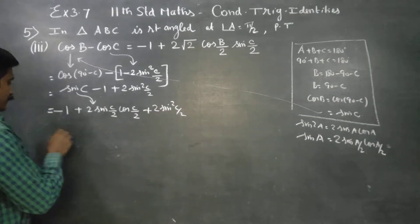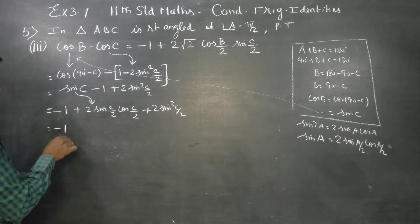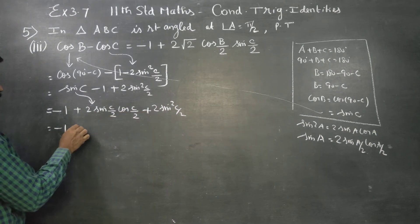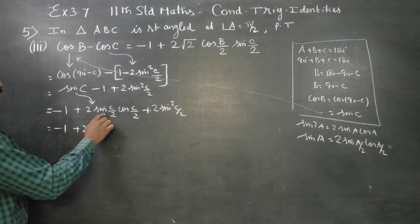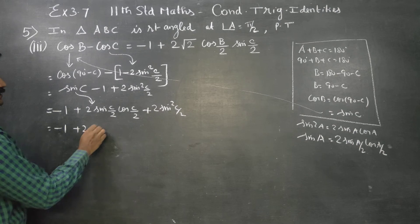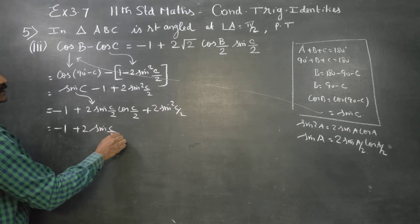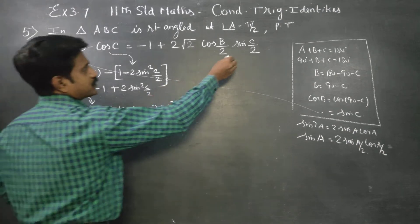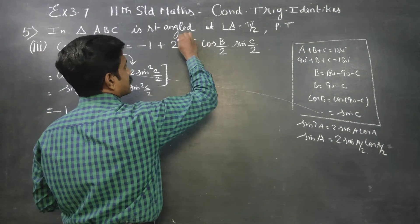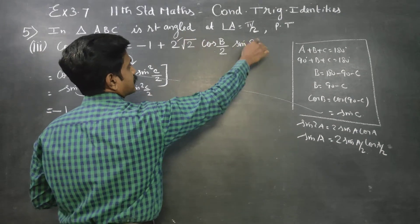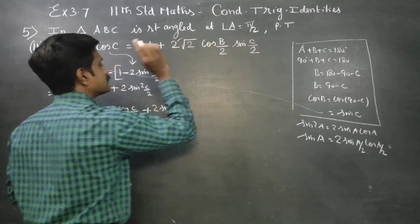Now, minus 1 — this is common, 2 is common, sin(c/2). The answer will be approached by 2 sin(c/2).